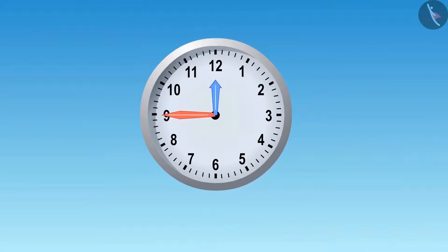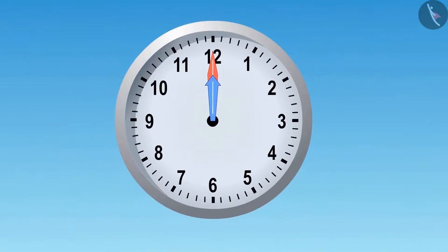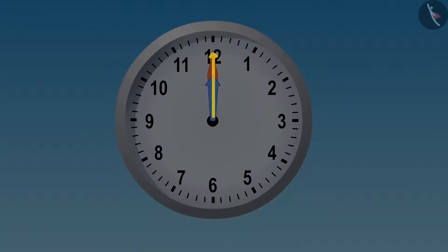At 12 o'clock there is no rotation between the hands. There will be no angle in this case. Because in this angle there is no rotation, we can call it as zero degrees.